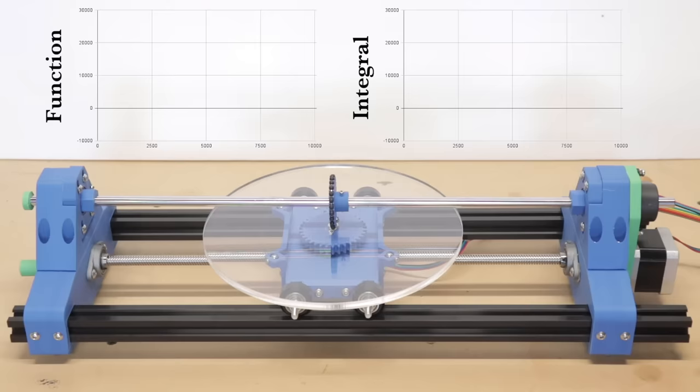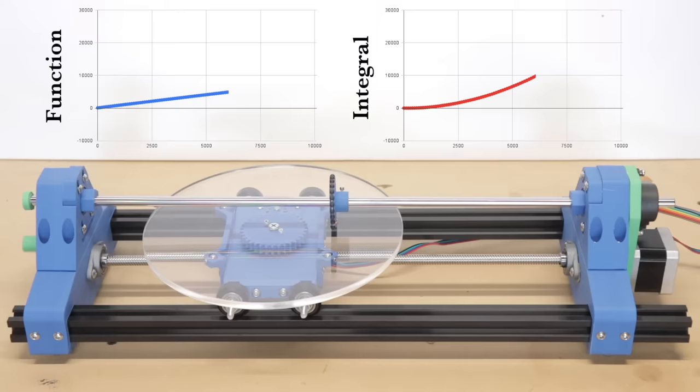Now our function is a linear slope starting at 0. With the rate of rotation increasing linearly, the integral grows at a constantly increasing rate, taking the form of a quadratic.